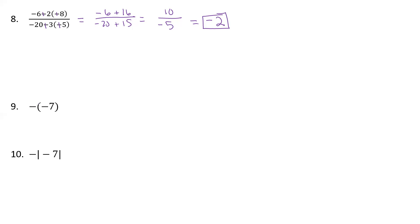Now we're back to similar problems, but ones with parentheses and absolute values. With parentheses, there's nothing going on in here, so we have basically the opposite of the opposite, which is a plus — that's a negative 1 times a negative 7, so that's just 7. But here we actually have to work inside of that first. We keep our negative out front, and think about turning left and going 7 blocks — because we went 7 blocks, the answer here is 7.